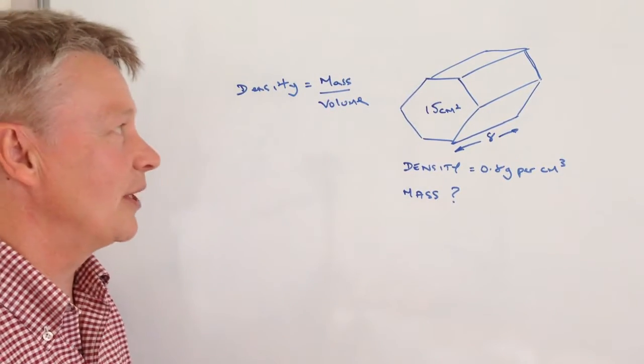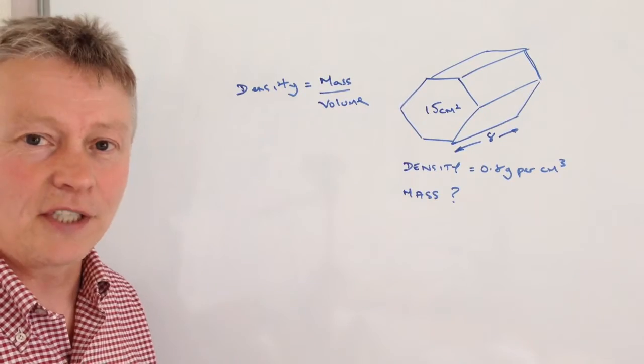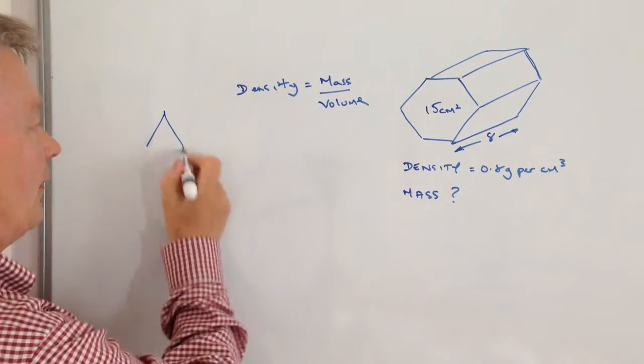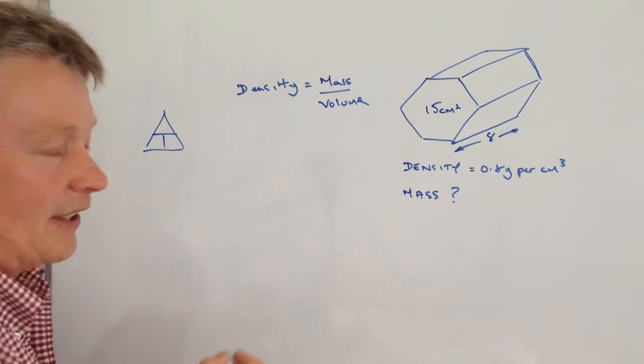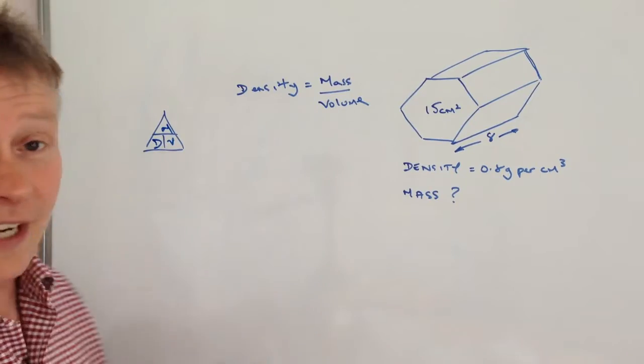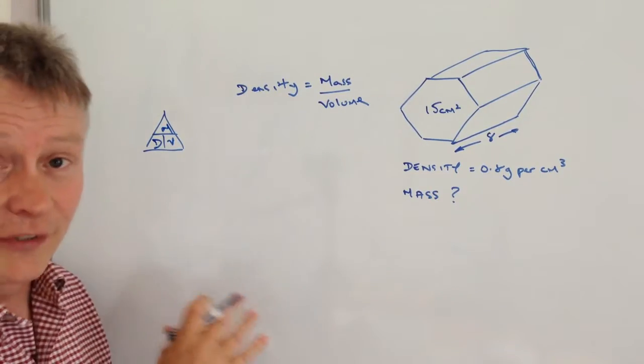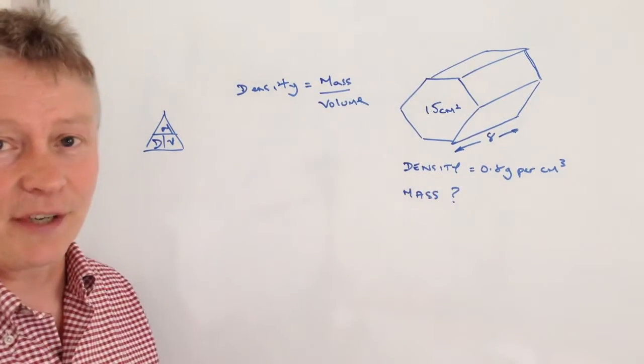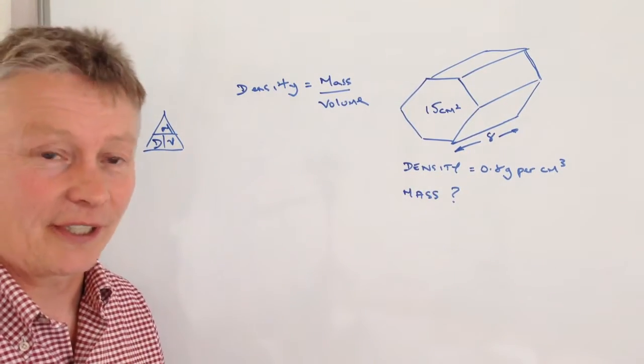Now I'm very aware that some people are taught this whole idea to use a triangle and you've got something like this, so you've got a triangle divided up and it'll say something like density, mass, and volume. That's absolutely fine if you remember how to do that triangle, perfectly good. I tend to use the units that I've been given to kind of figure out what I need to do.